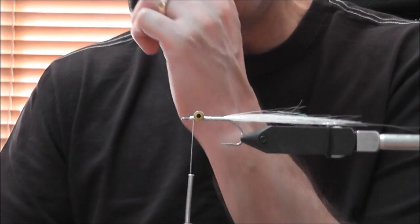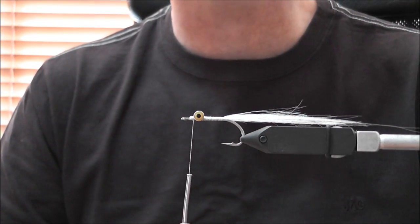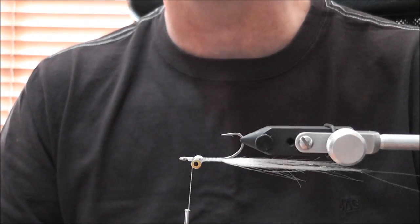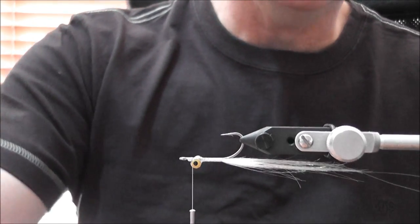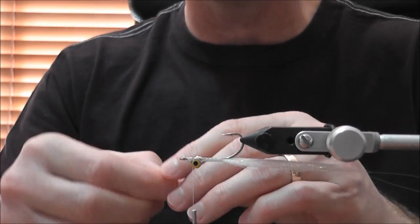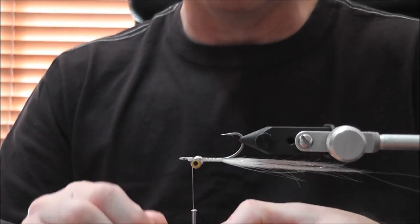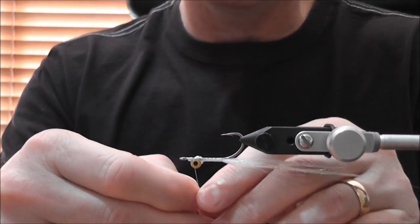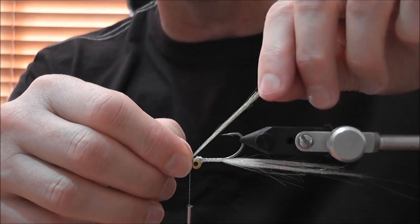Okay, so bringing the thread back to the front towards the eye of the hook and that's the bottom part of the fly done. So we just turn that over and then we get our top colour, whatever we want that to be. In this case I'm using olive, which is my favourite combination. The white under and then the olive over the top.